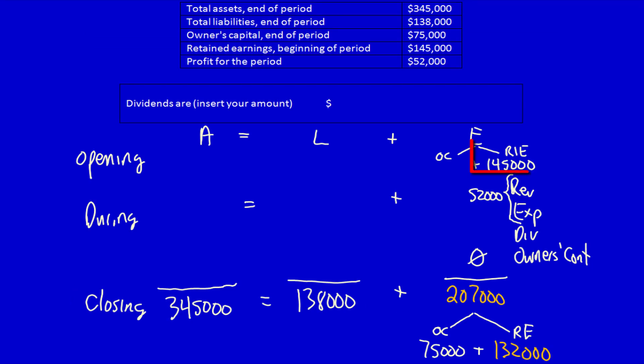So here we have opening retained earnings. We're going to add in the profit, we're going to deduct the dividends, which is some unknown number x, which is going to be negative, and that's going to equal closing retained earnings.